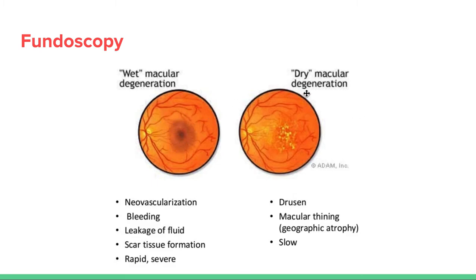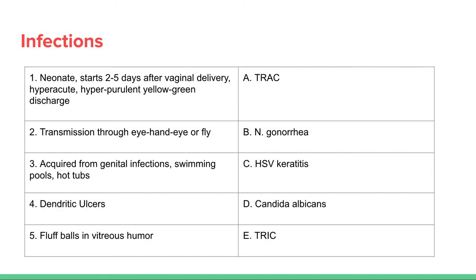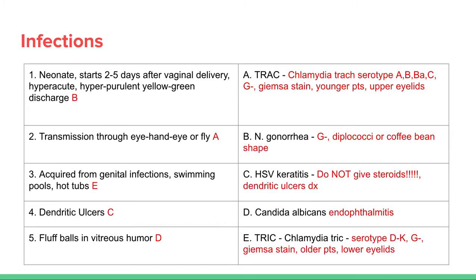Number seven is wet macular degeneration and eight is dry macular degeneration. The problem is in the macular area or fovea — the rest of the eye looks pretty normal around the macula, which tells you this is a macular problem. Wet macular degeneration involves neovascularization and bleeding specifically in the macular region. Dry macular degeneration involves drusen and macular thinning.